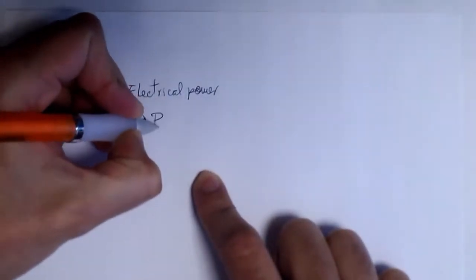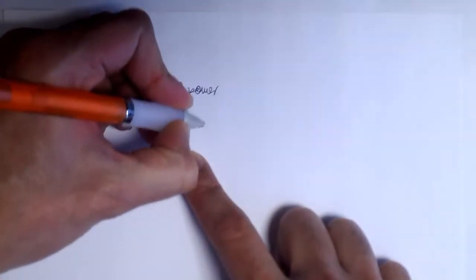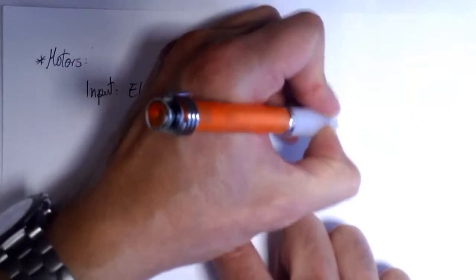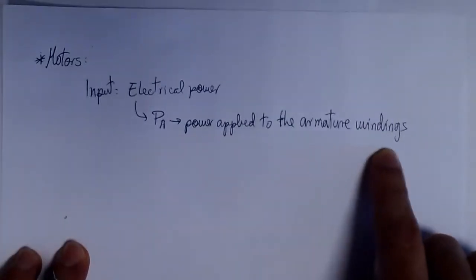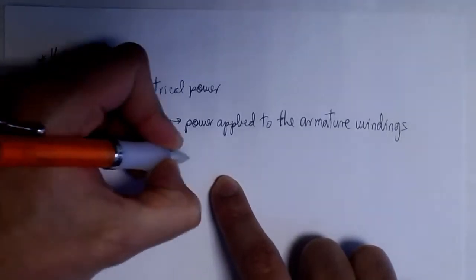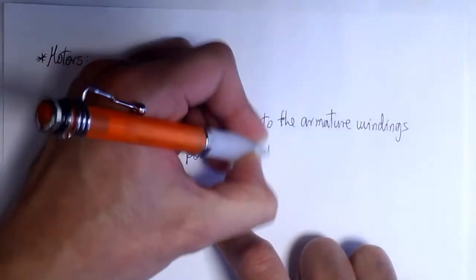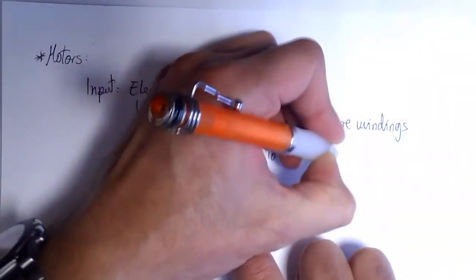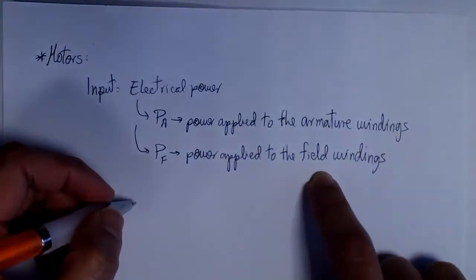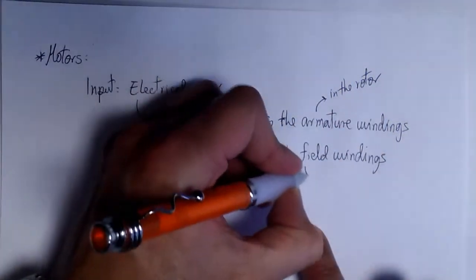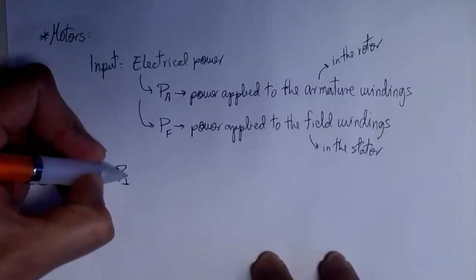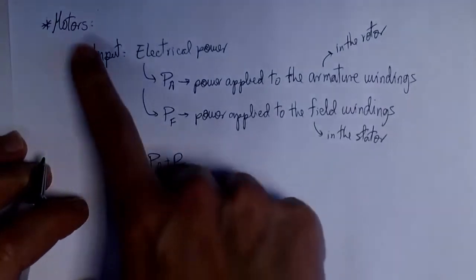In a motor, the input power is purely electrical. There are two types of power: PA, the electrical power applied to the armature windings — which are coiled in the rotor of the motor — and PF, the electrical power applied to the field windings, which are the coils in the stator. The armature windings are in the rotor, the rotating part, and the field windings are in the stator, the static part. The total input power is the sum of the electrical power applied to both windings.